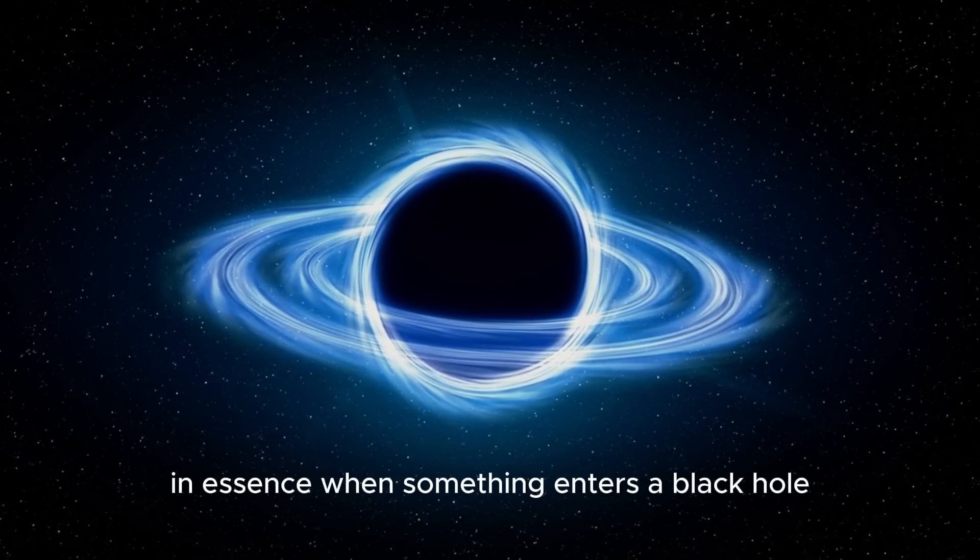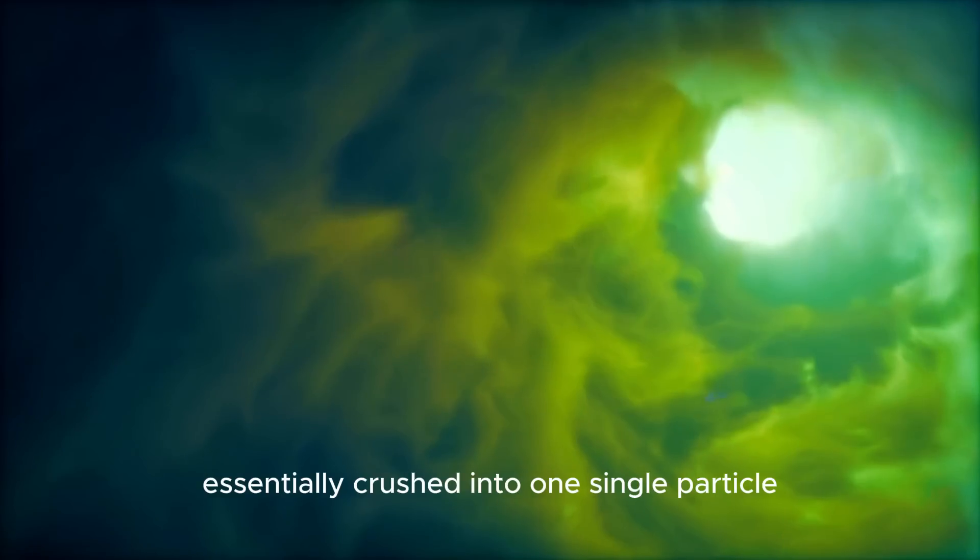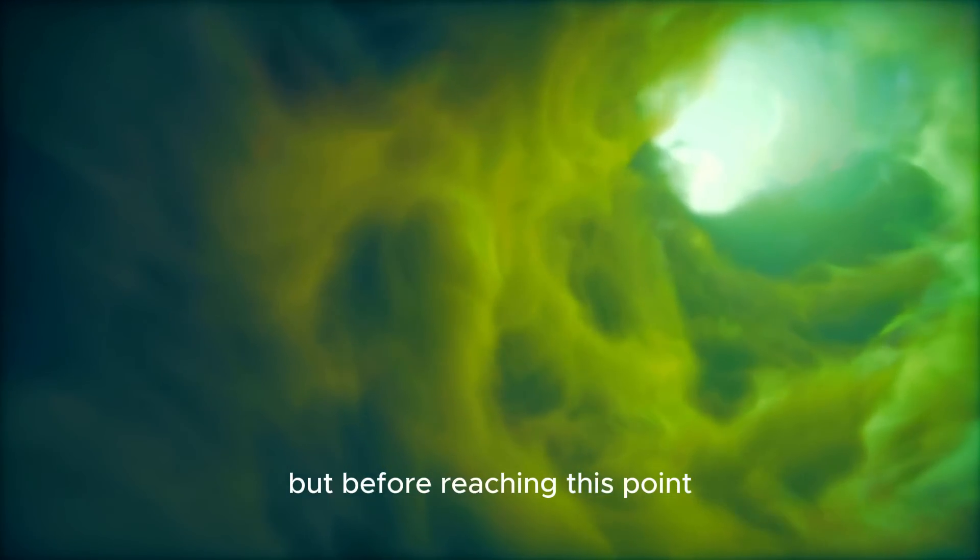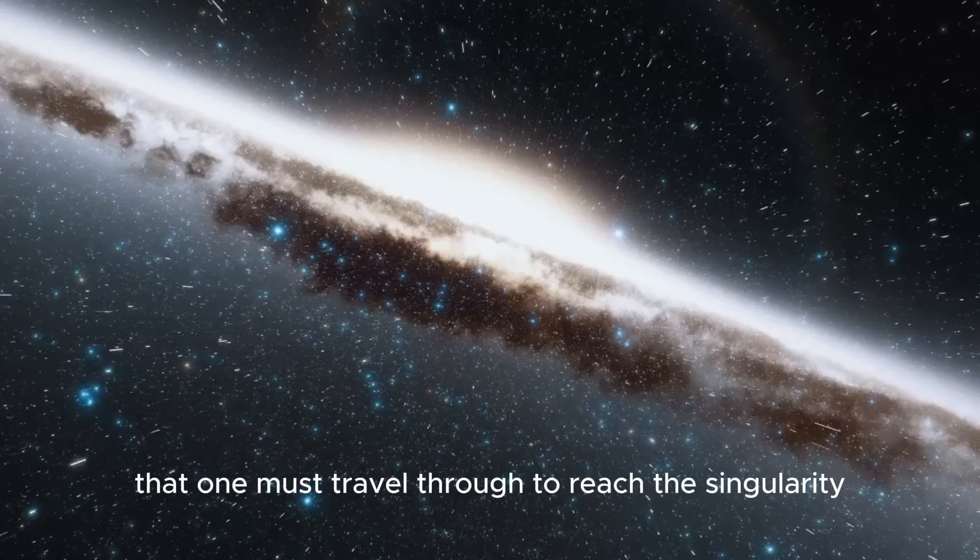In essence, when something enters a black hole, it is trapped and compressed down astronomically until it reaches the singularity, the main mass point of this entity where all matter is essentially crushed into one single particle. But before reaching this point, there are two layers of the black hole that one must travel through to reach the singularity.